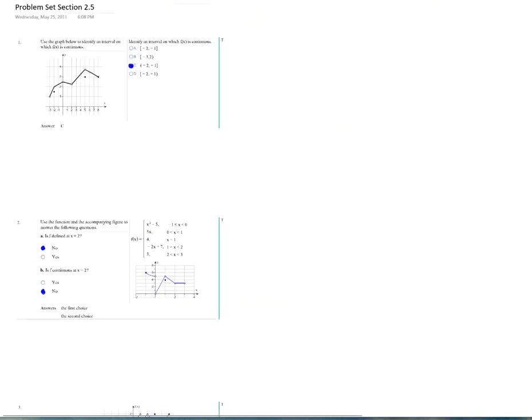In number 1, use the graph to identify an interval on which this is continuous. We need to look at our choices. This one says from negative 2 to negative 1 in brackets. From negative 2 to negative 1, that is this little piece right here. There's an open circle there, but it is filled in there. So that's not quite going to do it because on our function that would be a removable one. That's got a hole.